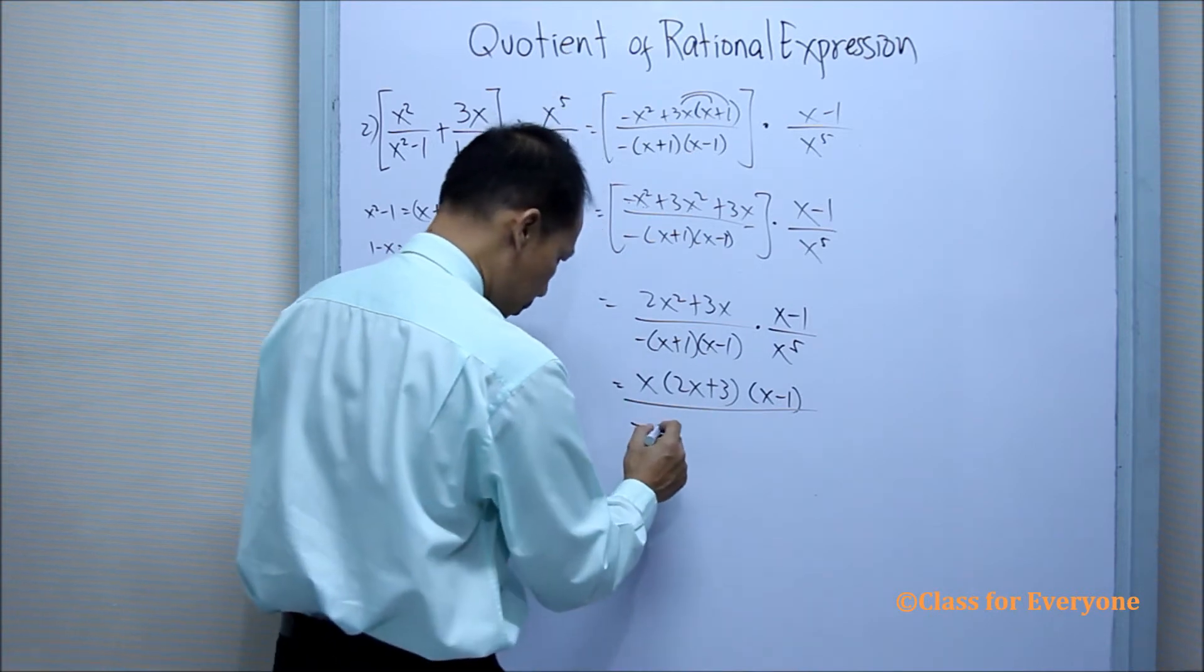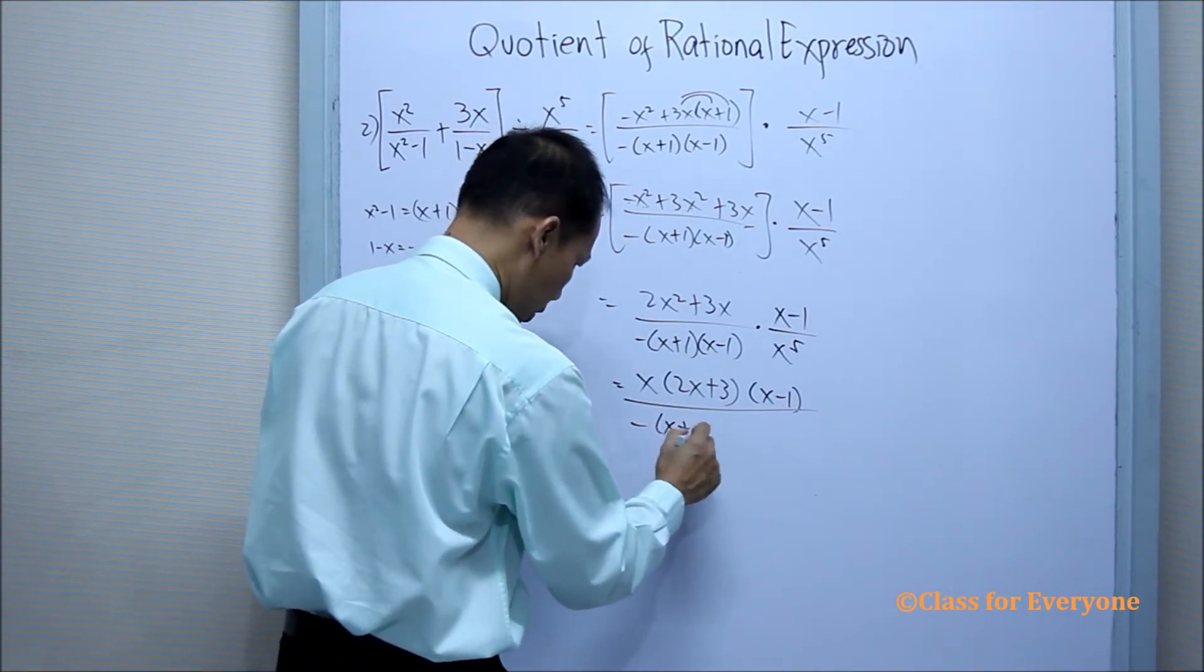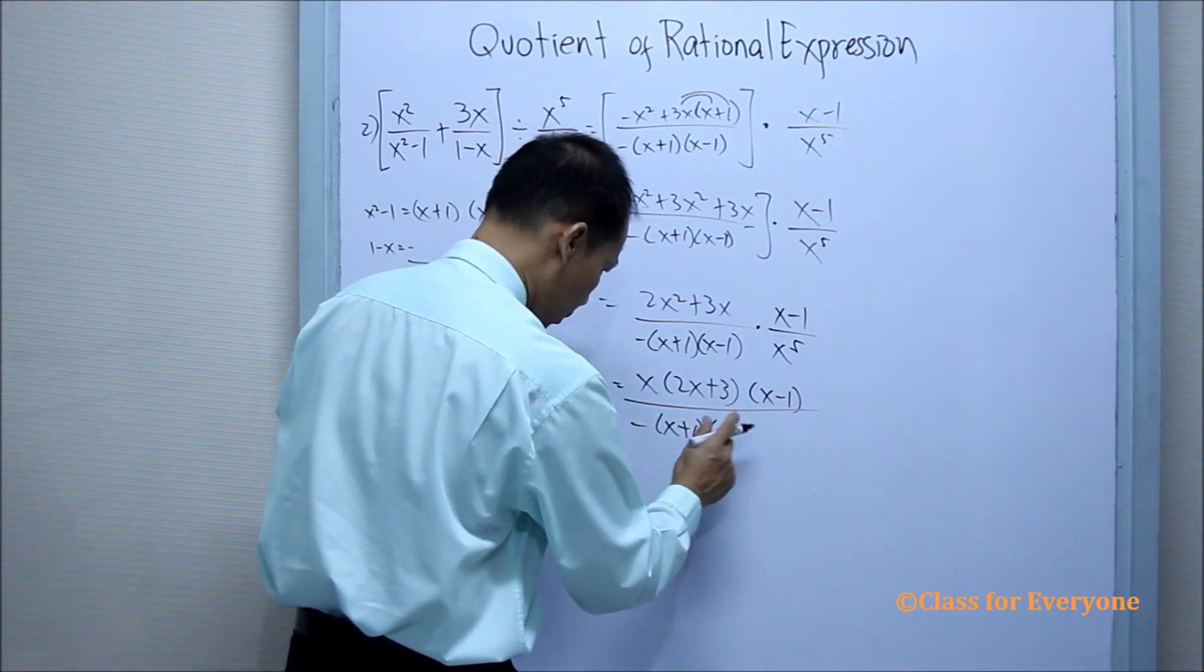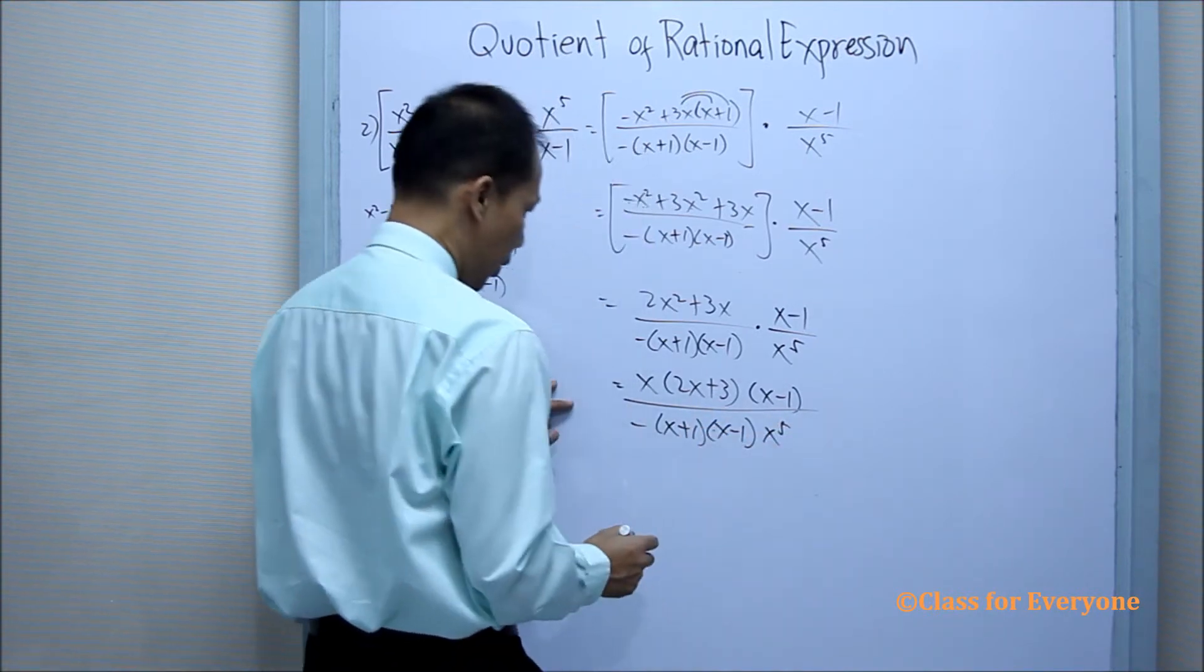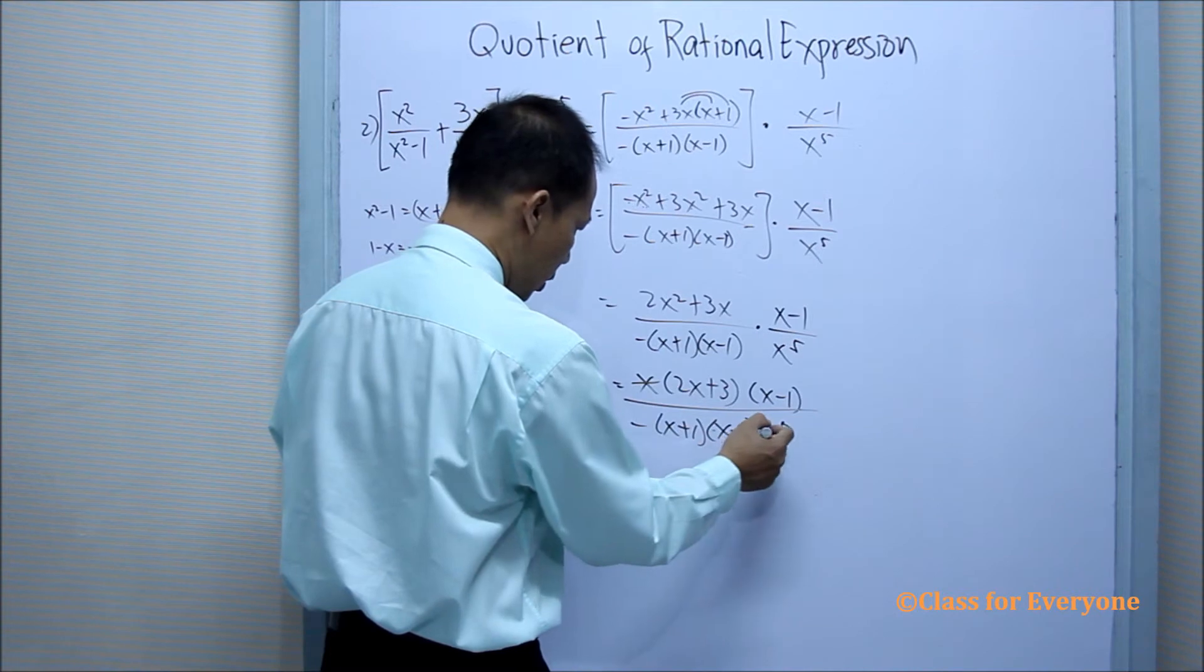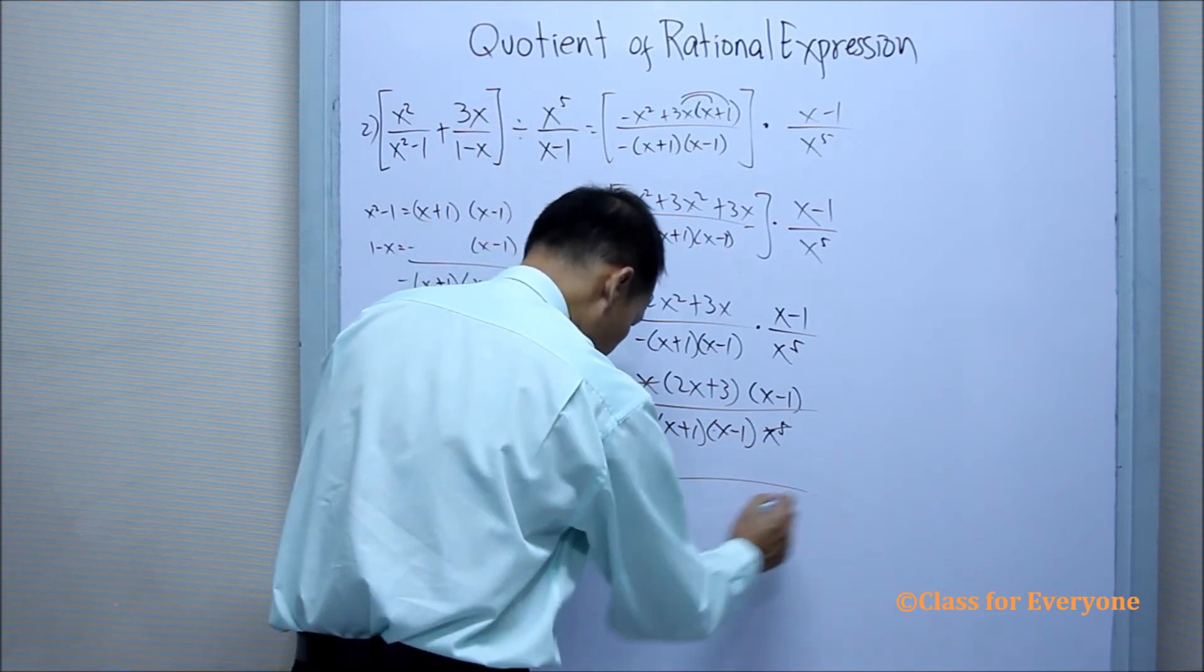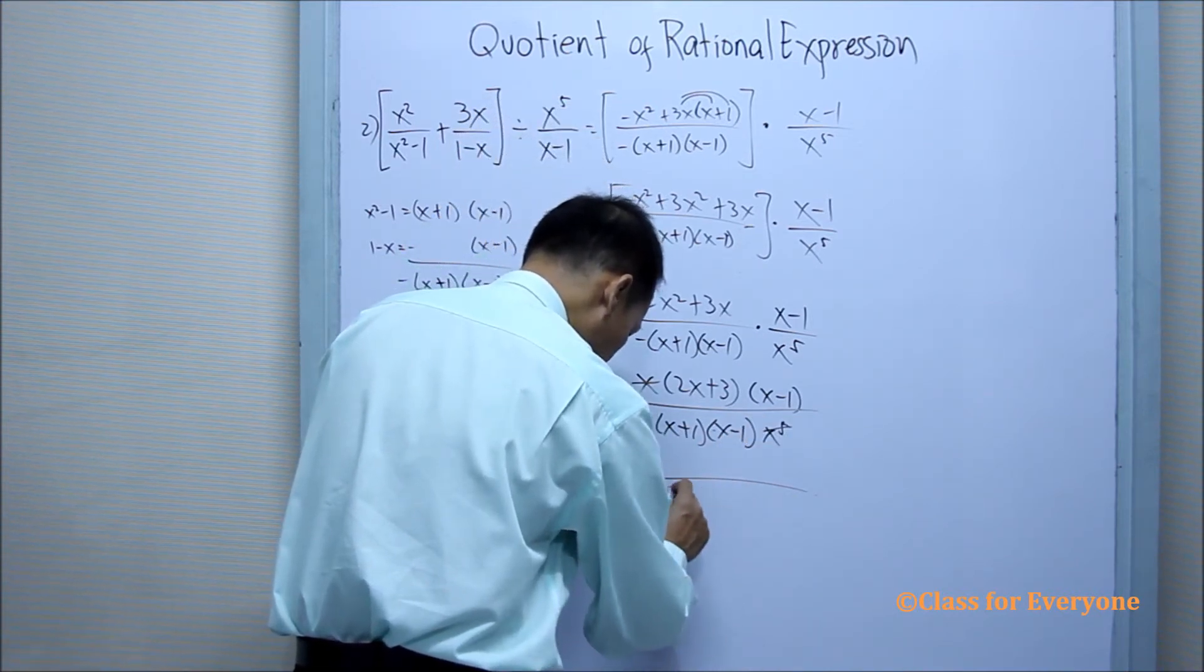All over negative x plus 1, x minus 1, and x to the fifth. There is a common factor of x and x to the fifth. So the denominator will have x to the fourth.